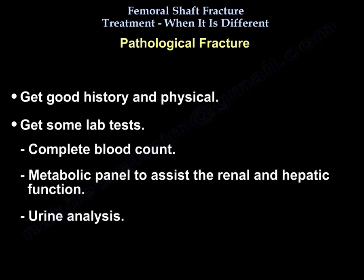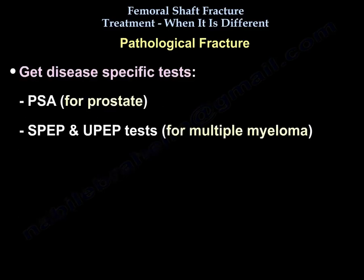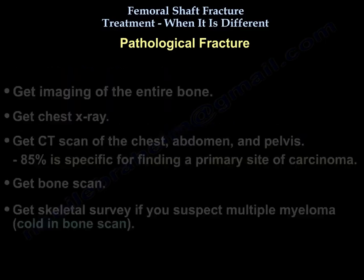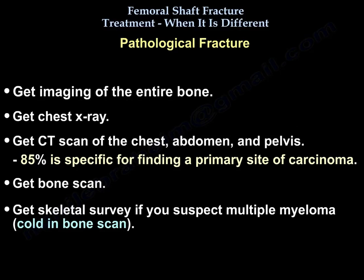You want to see that patient, get a good history and physical, and get some lab tests including complete blood count and a metabolic panel to assess renal and hepatic function, plus urinalysis. Get disease-specific tests, for example PSA for the prostate, and SPEP and UPEP for multiple myeloma. You want to image the entire bone: get a chest X-ray, CT scan of the chest, abdomen, and pelvis, a bone scan, and skeletal survey if you suspect multiple myeloma. CT of chest, abdomen, and pelvis is 85% specific for finding a primary site of carcinoma.